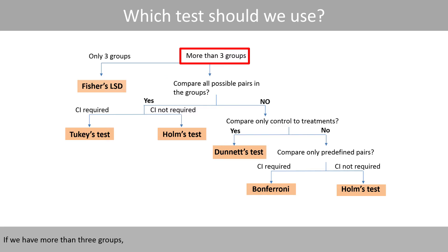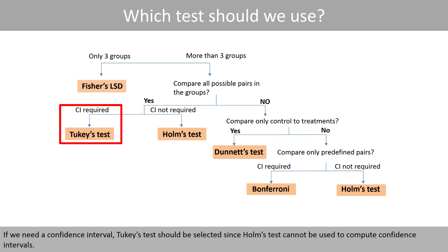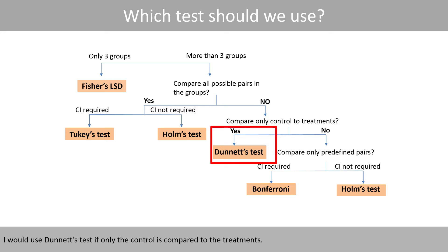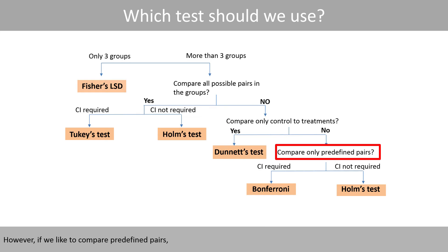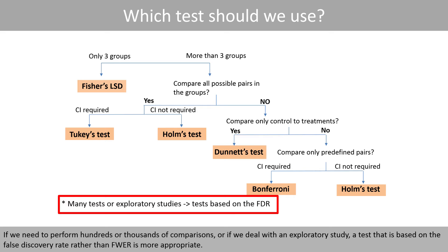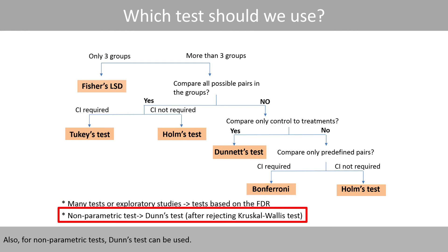If we have more than three groups and want to compare all possible pairs, I would select either Holm's or Tukey's test. If a confidence interval is needed, Tukey's test should be selected since Holm's test cannot be used to compute confidence intervals. If we do not want to compare all possible pairs, I would use Dunnett's test if only the control is compared to treatments. However, if we want to compare predefined pairs, we could use Bonferroni if confidence intervals are required, or Holm's test if confidence intervals are not needed. If we need to perform hundreds or thousands of comparisons, or are dealing with an exploratory study, a test based on the false discovery rate rather than the family-wise error rate is more appropriate. For non-parametric tests, Dunn's test can be used.